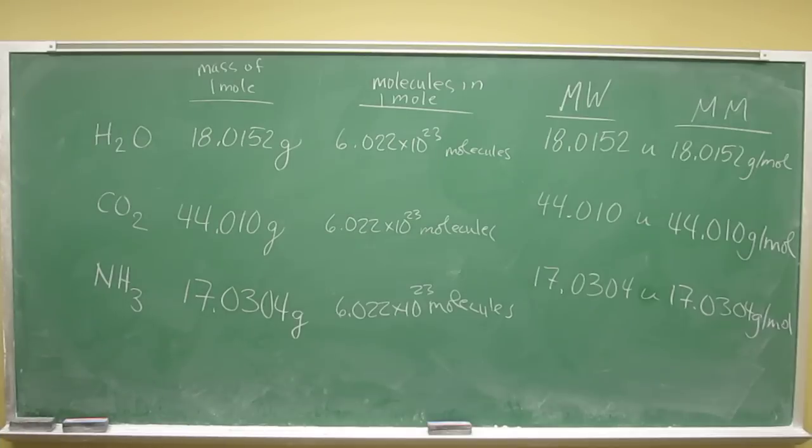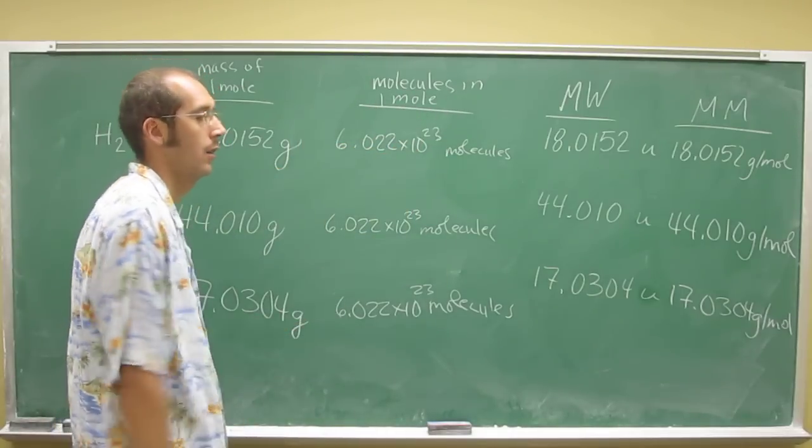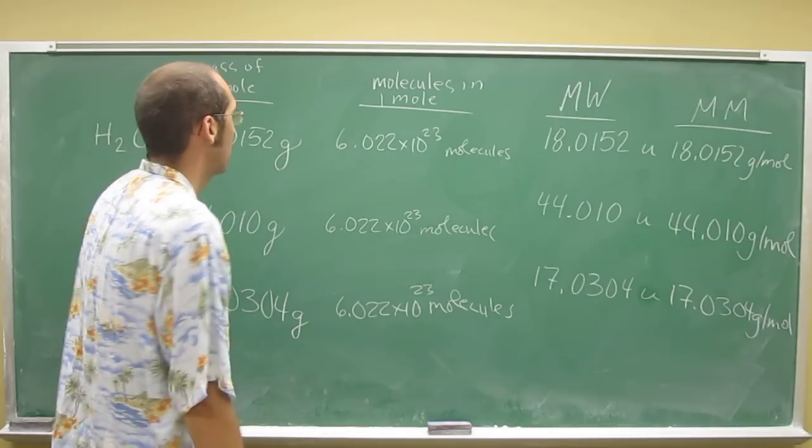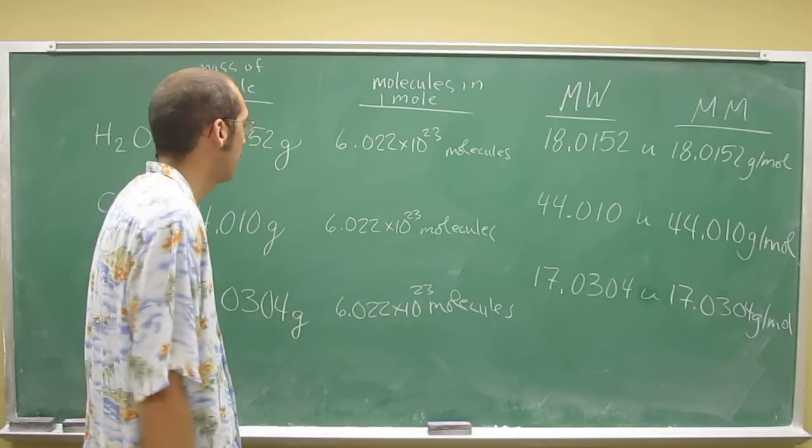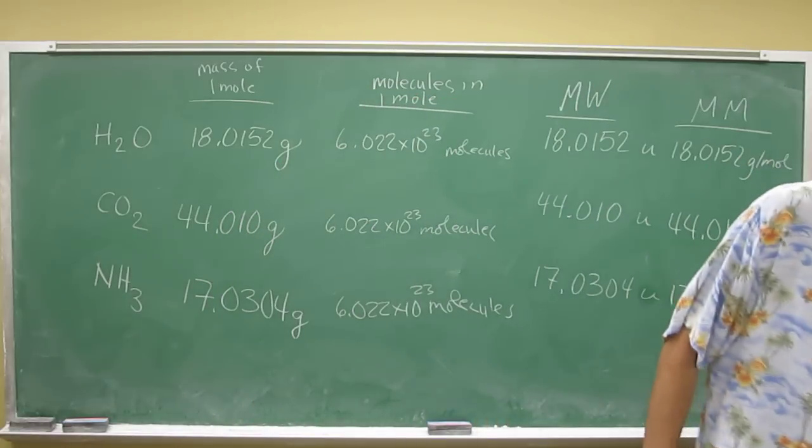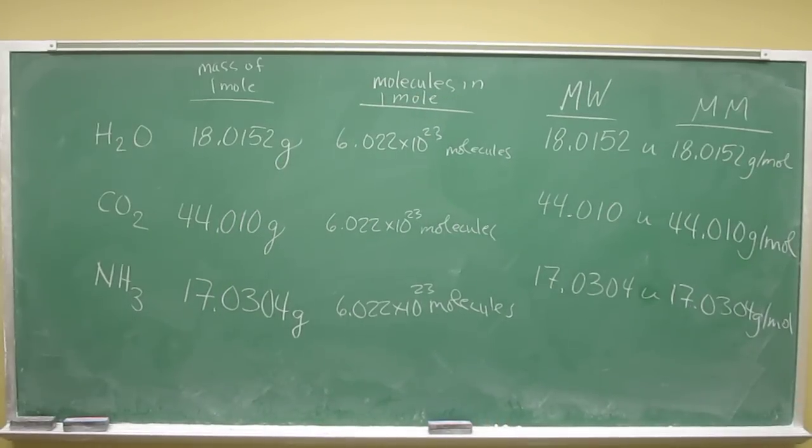Why? Because a mole is just a number. It's like a dozen. So a dozen eggs is always 12 eggs, a dozen donuts is always 12 donuts. So a mole of something is always this number: 6.022 times 10 to the 23rd. Okay, so hopefully that helps everybody out.